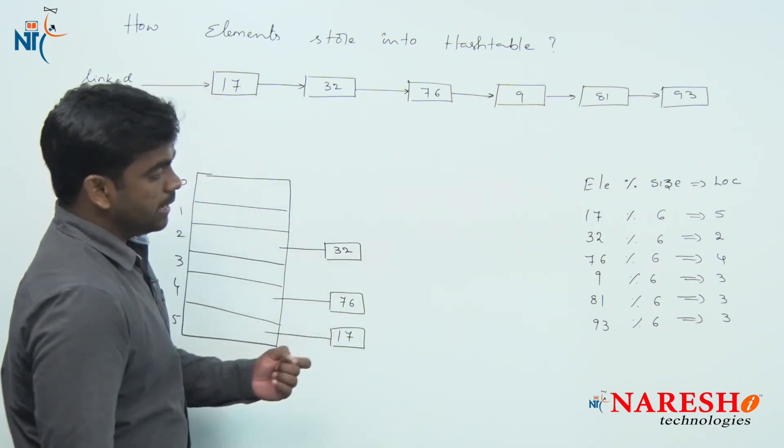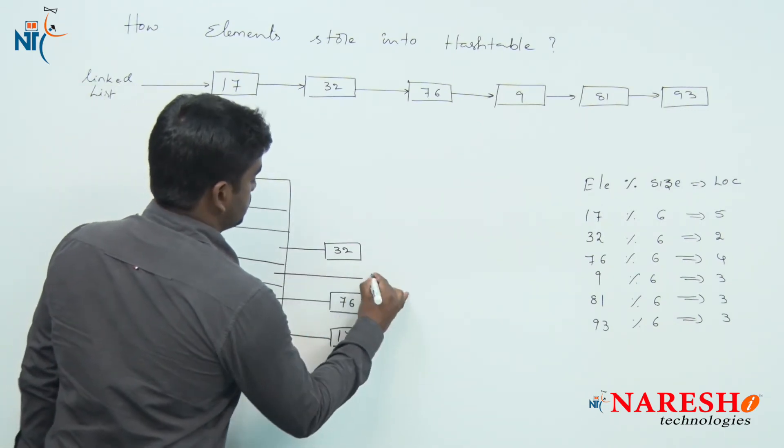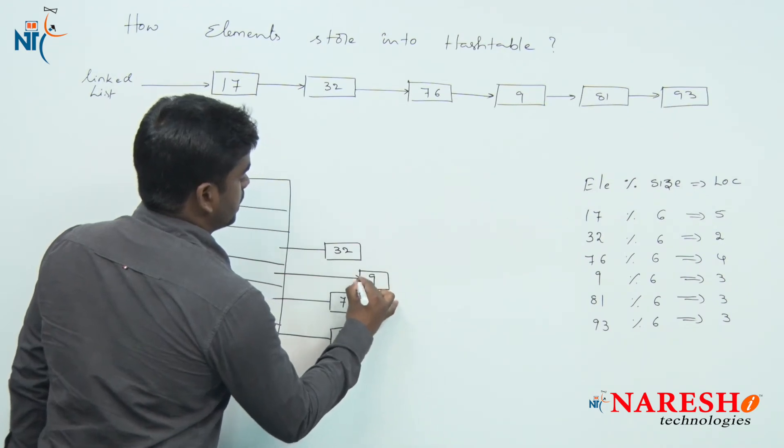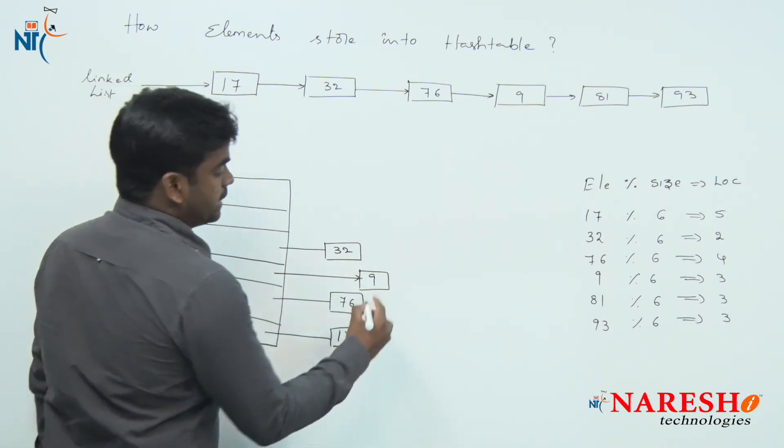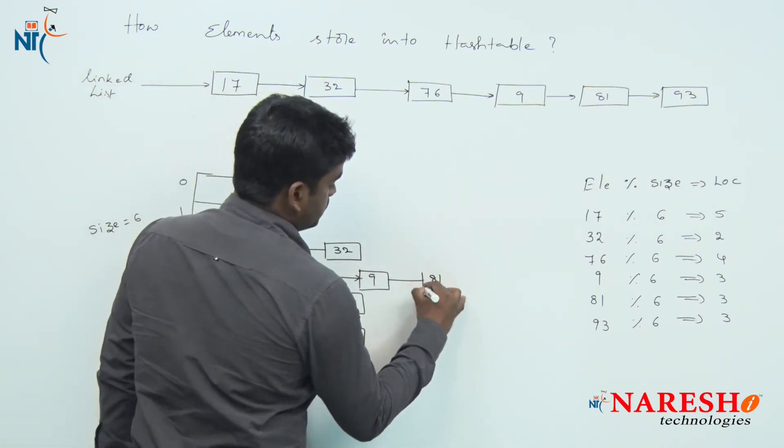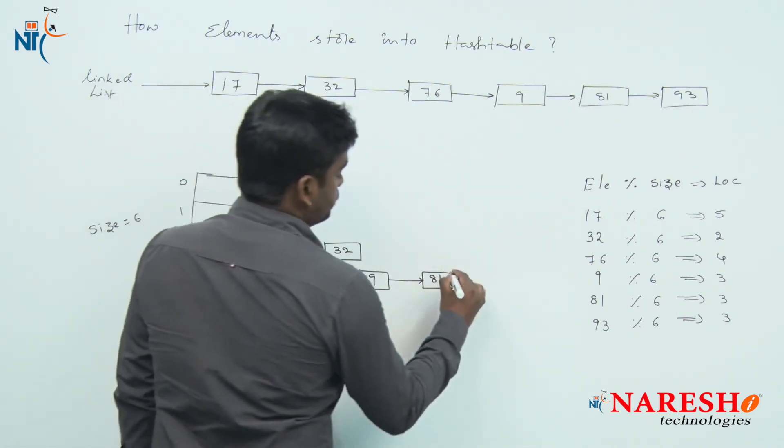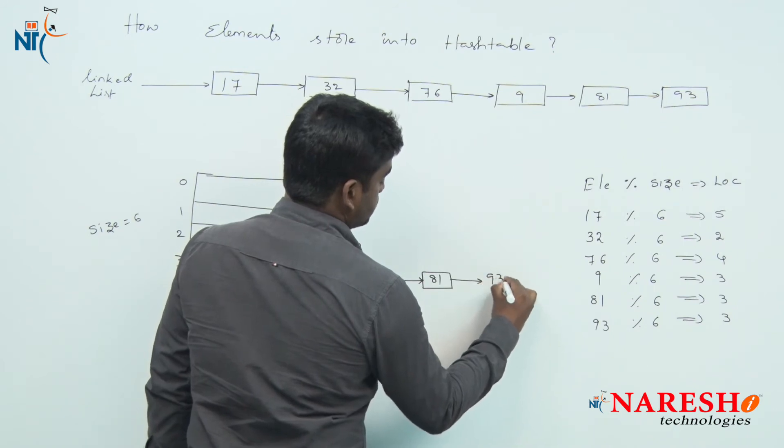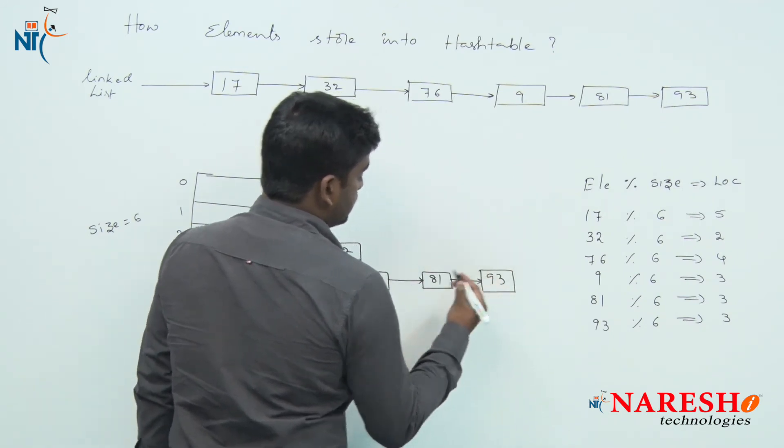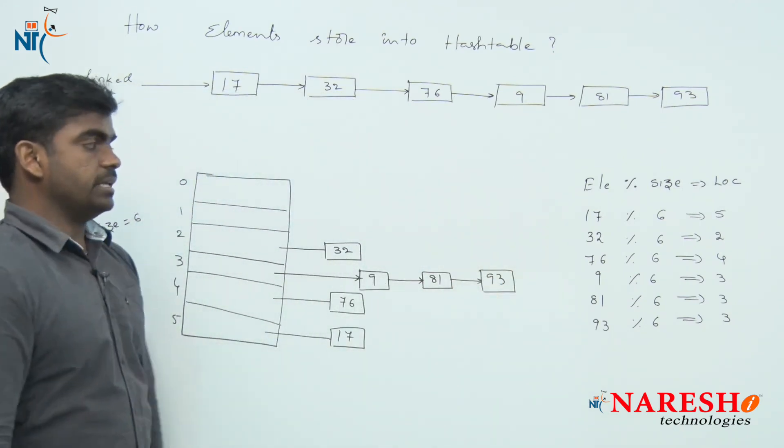76, and next 9 we need to connect from the 3rd location. And next 81 also we need to connect from the 3rd location. Like that the elements will be connected from the hash table.